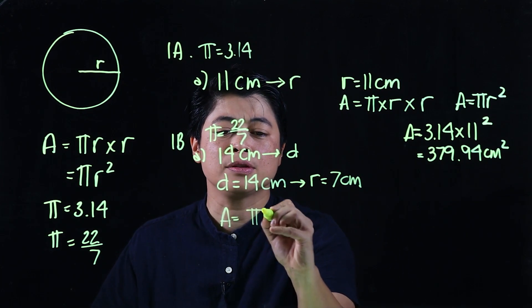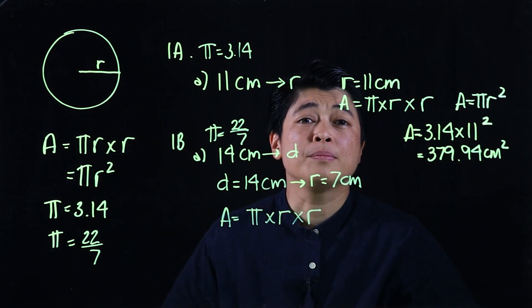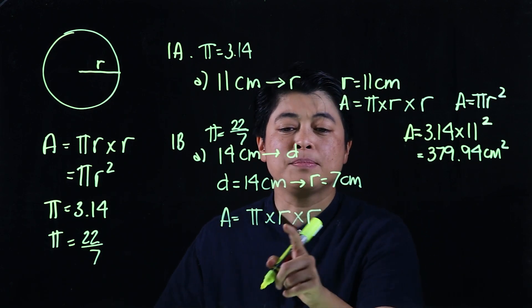So which means if we want area is equal to pi times r times r, since it's mental computation then that means it's better to write out the r times r rather than the square because you have to process the multiplication.